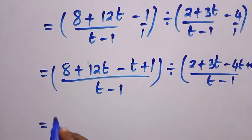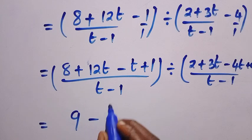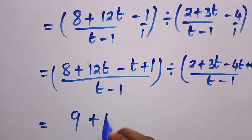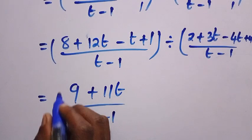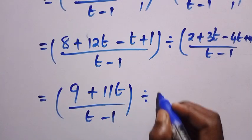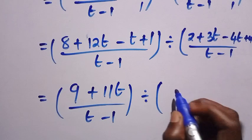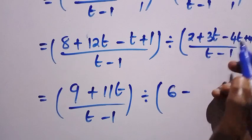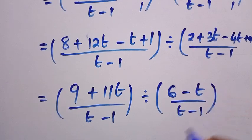Simplifying the numerator: 8 plus 1 is 9, and 12t minus t is 11t, all divided by t minus 1. For the denominator: 2 plus 4 is 6, and 3t minus 4t is minus t, giving 6 minus t divided by t minus 1.